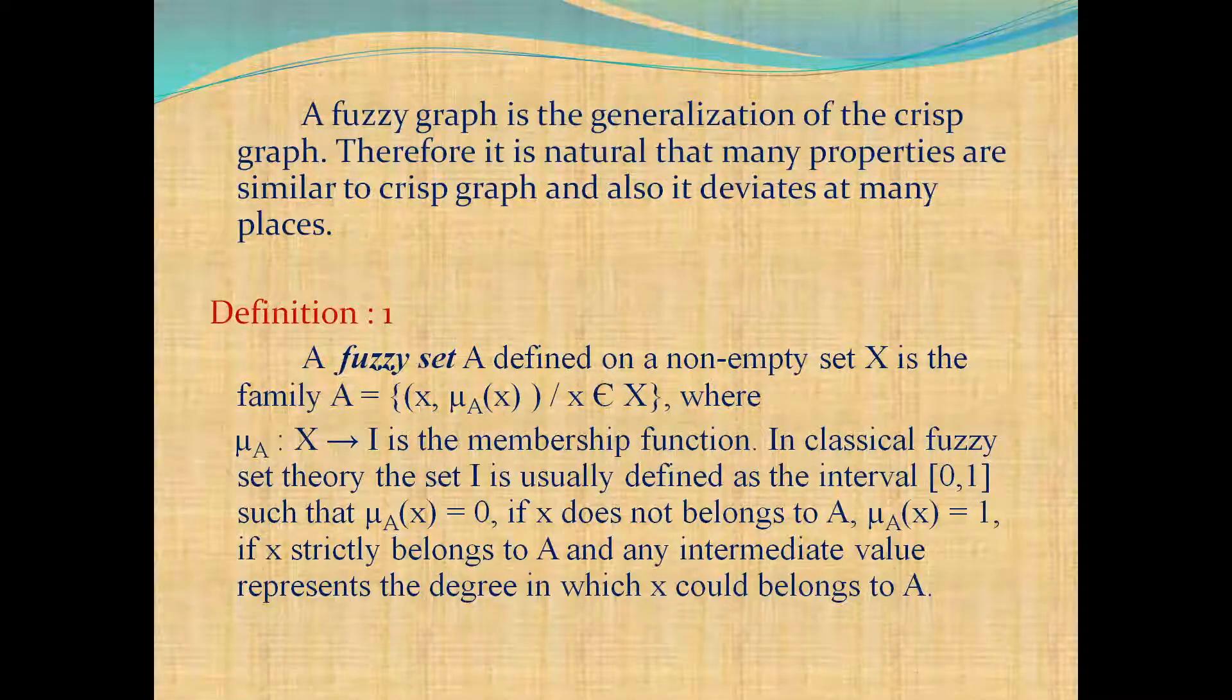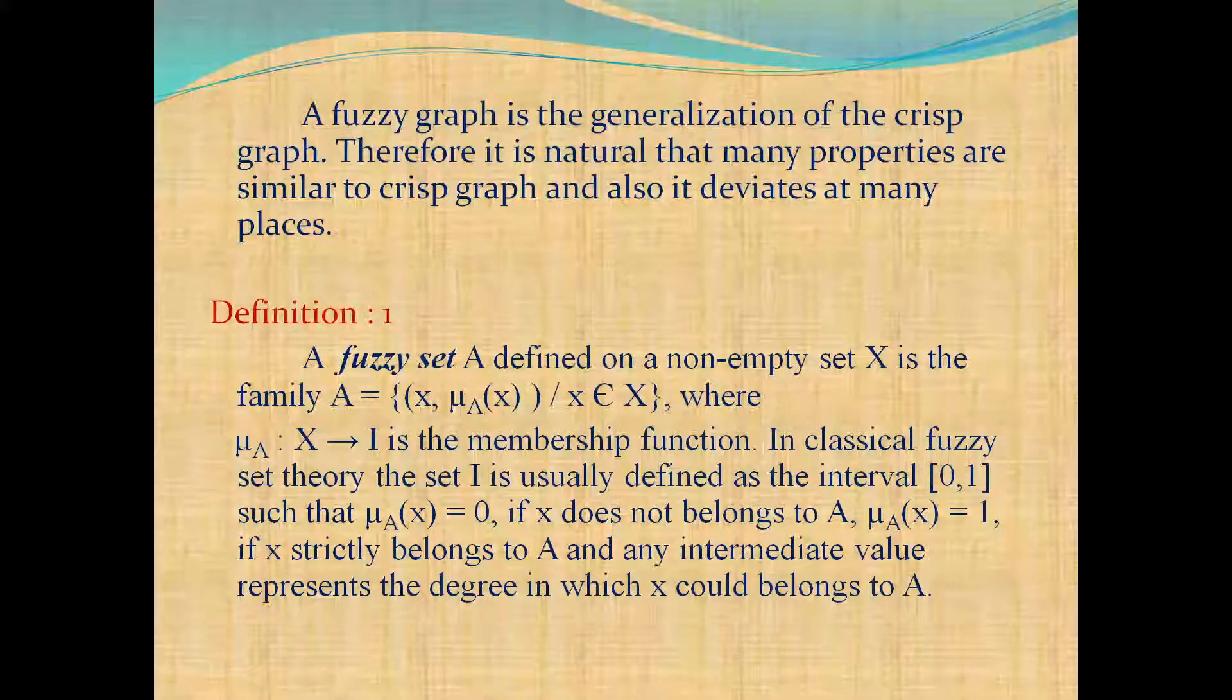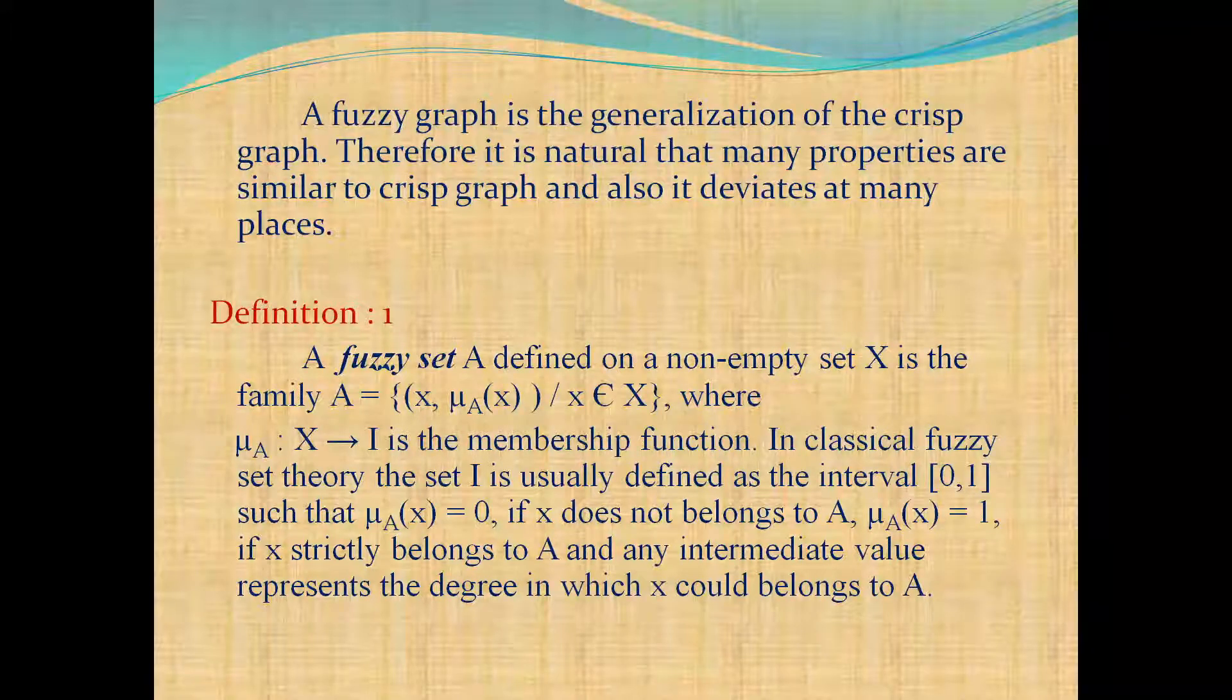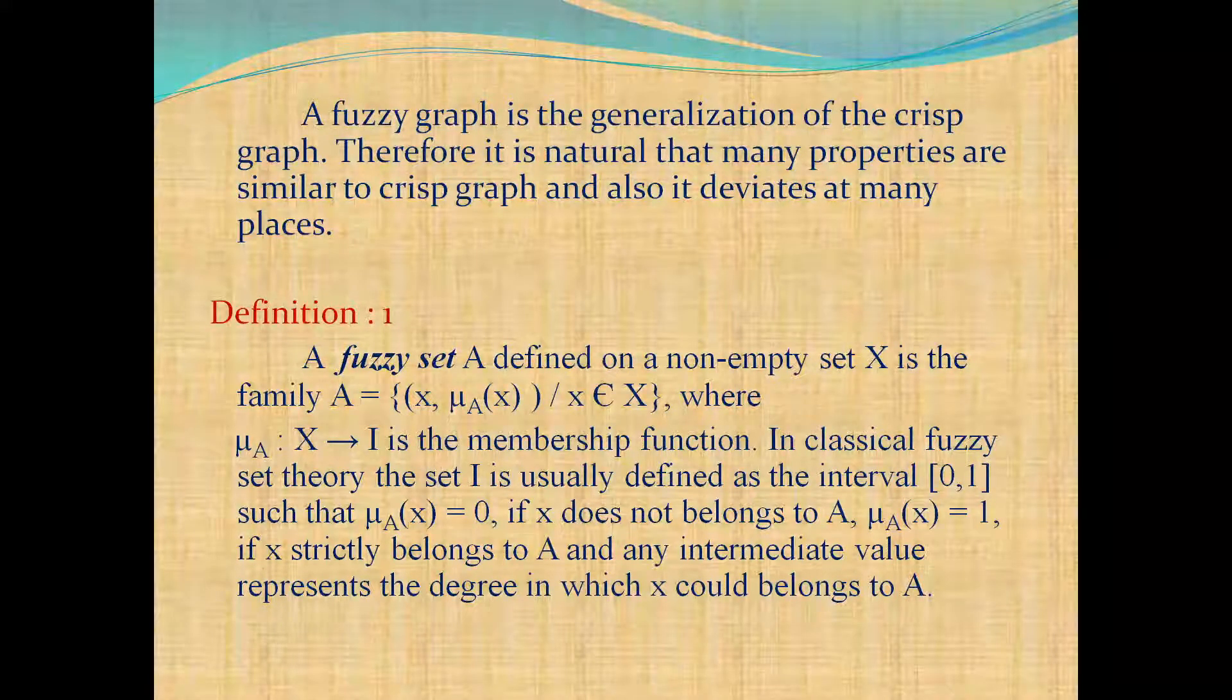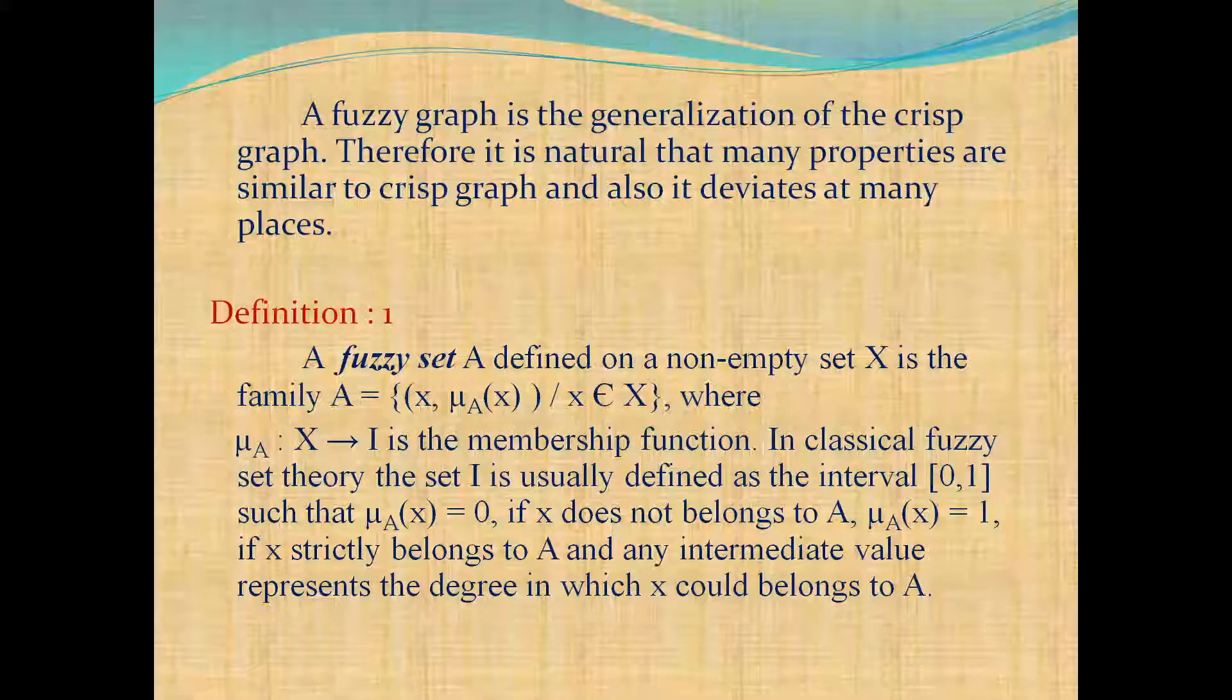such that μ_A(x) = 0 if x does not belongs to A, μ_A(x) = 1 if x strictly belongs to A, and any intermediate value represents the degree in which x belongs to A.